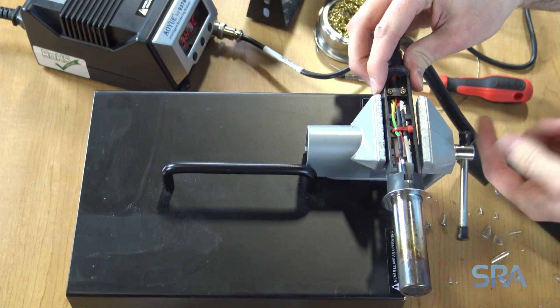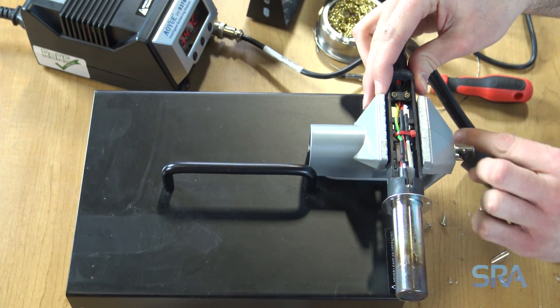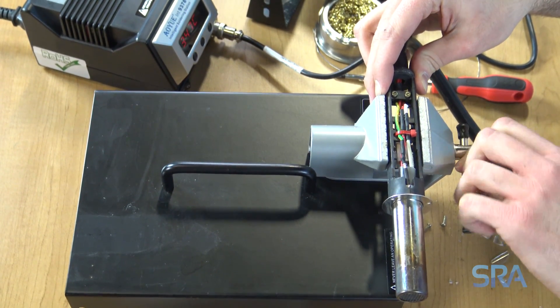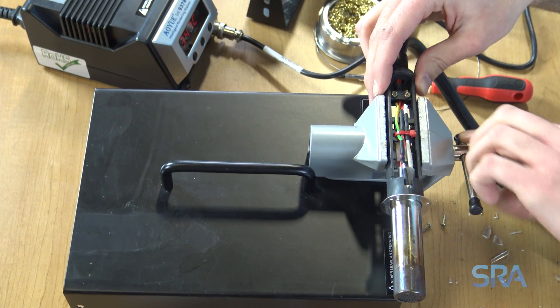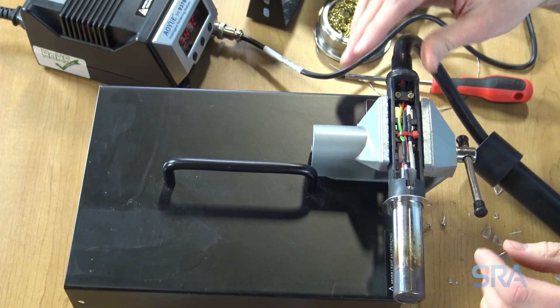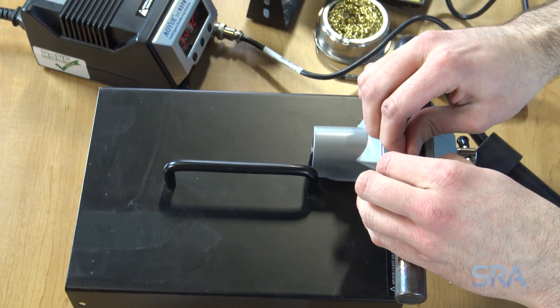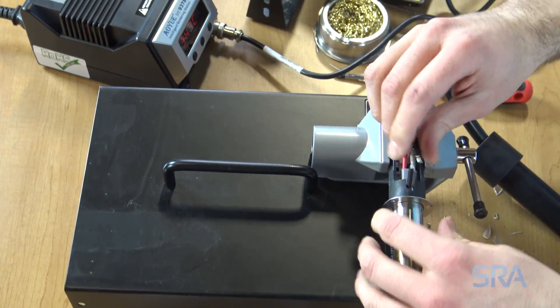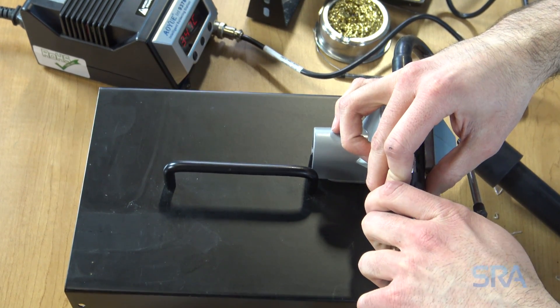We're going to get this in our vise. To remove the heat tube, you just want to disconnect the ground wire and then you can pull it straight out.